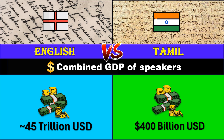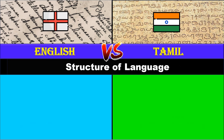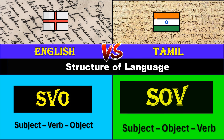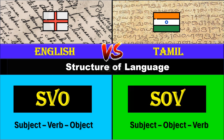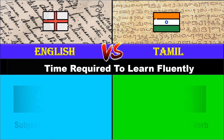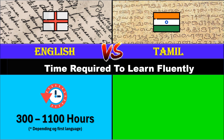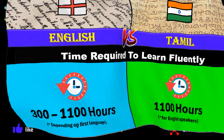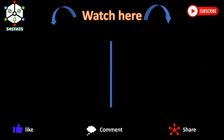Structure of language: English is an SVO language, Tamil is an SOV language. Time required to learn fluently: English requires between 300 to 1,100 hours depending on the learner's first language; for Tamil it's around 1,100 hours.